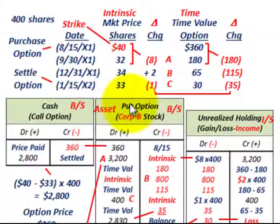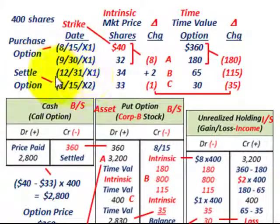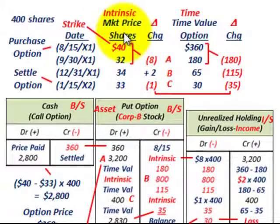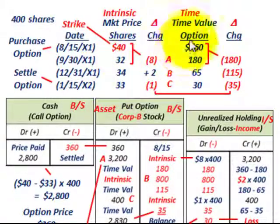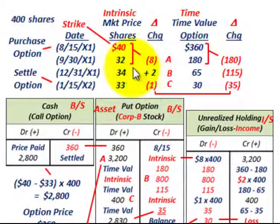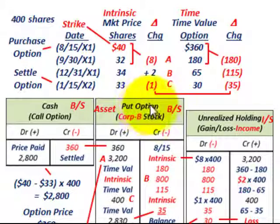So let's go and look at how we'd break this down and record it. We're going to lay out this option where we purchased the option, then look at several dates, and finally look at when we settle or execute the put option. We have to break this down between the intrinsic value portion — that's the market price change — and also the time value portion. These go into what we call the put option account, which is an asset account classified for that Corp B stock.